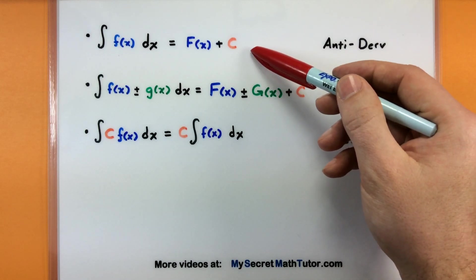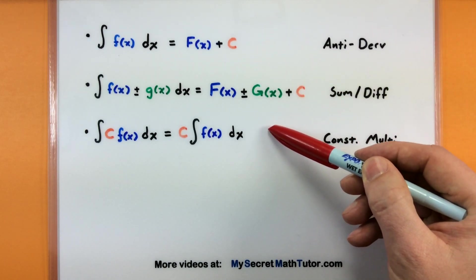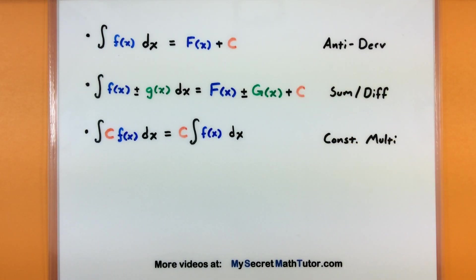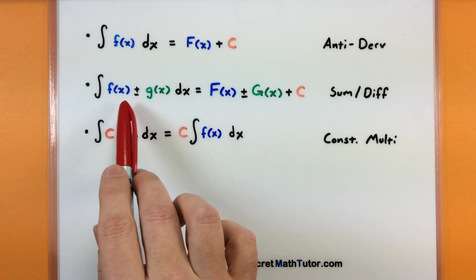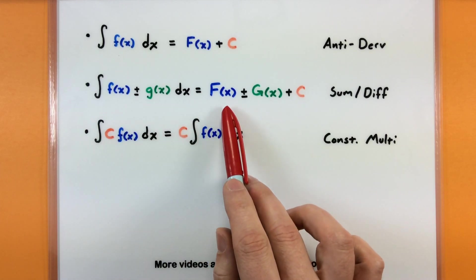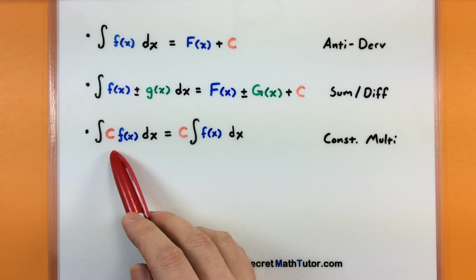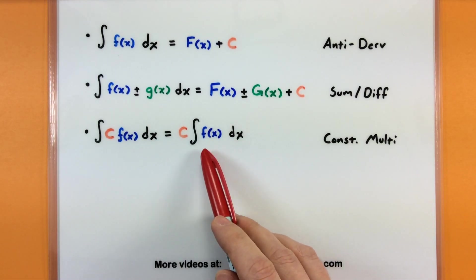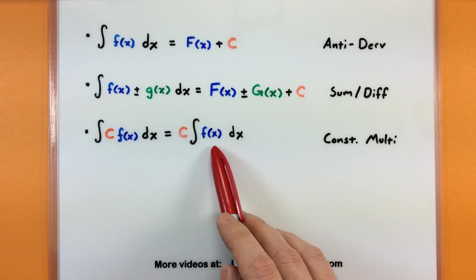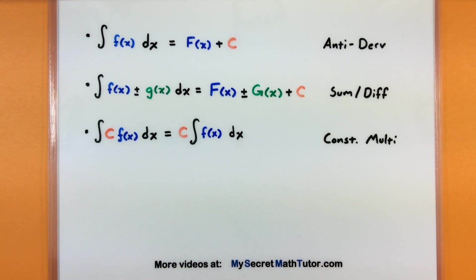That's the biggest thing to keep in mind, but indefinite integrals also have a sum and difference rule: if you have two functions that are added or subtracted, you simply take the anti-derivative of each of those and add or subtract respectively. If you have a constant multiplied out front, feel free to pull out that constant and just worry about taking the anti-derivative of the function left on the inside. There are not a lot of rules, which is a nice thing — not a lot to remember.